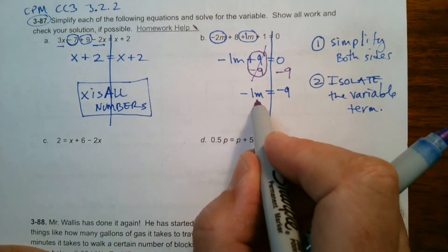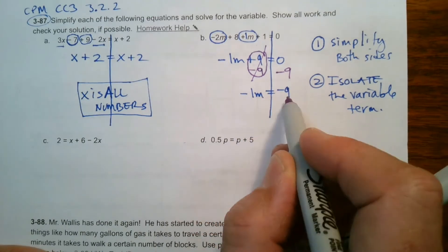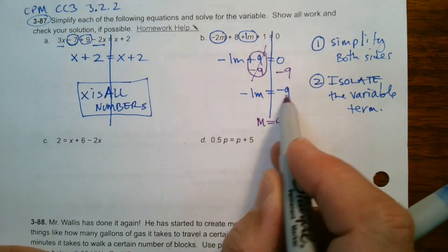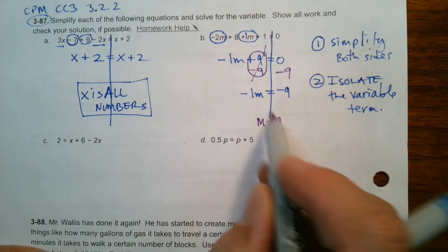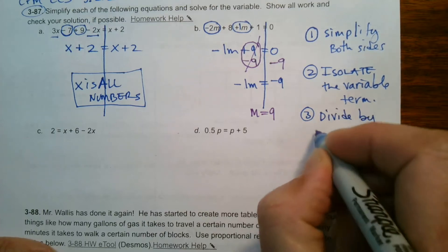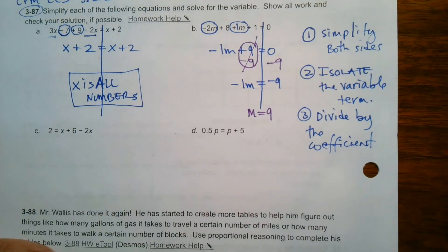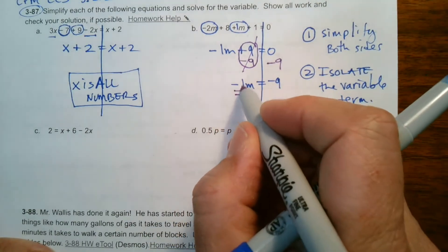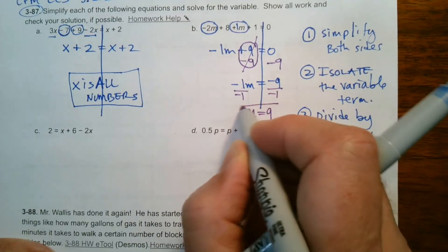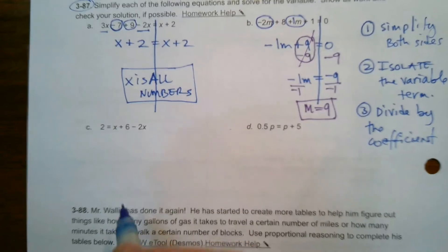Negative 1 times some value equals negative 9. Negative 1 times 9 is negative 9, so M equals 9. The third step in solving the equation is always to divide by the coefficient. The coefficient is negative 1, so dividing both sides by negative 1: negative 1 divided by negative 1 gives M by itself, and negative 9 divided by negative 1 is positive 9. So M equals 9.